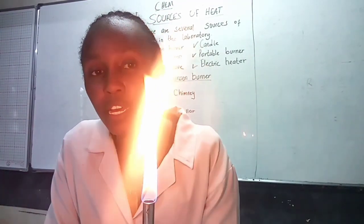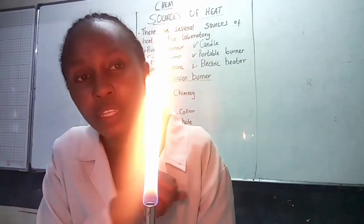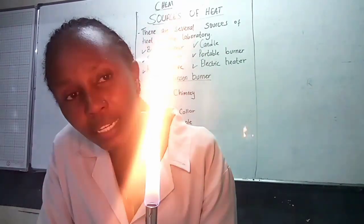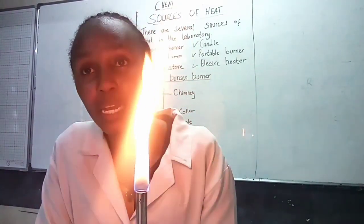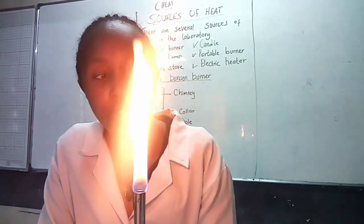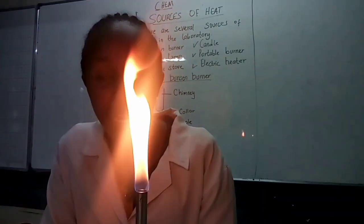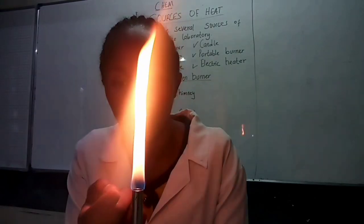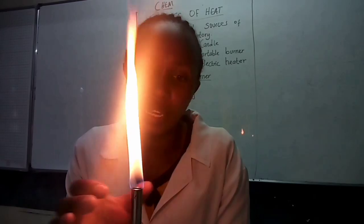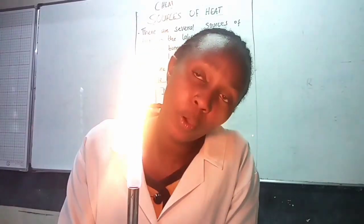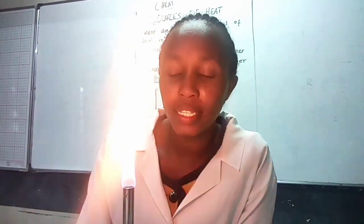The luminous flame has four zones. The outer one is thin and pale blue, but not easy to see. Then there is the second layer or zone which is bright yellow, because it contains unburnt carbon particles, so if you heat with it you are going to get soot on your apparatus. Down below we have a blue zone where air mixes with the gas and they are completely burnt, and right inside there is an almost colorless zone.